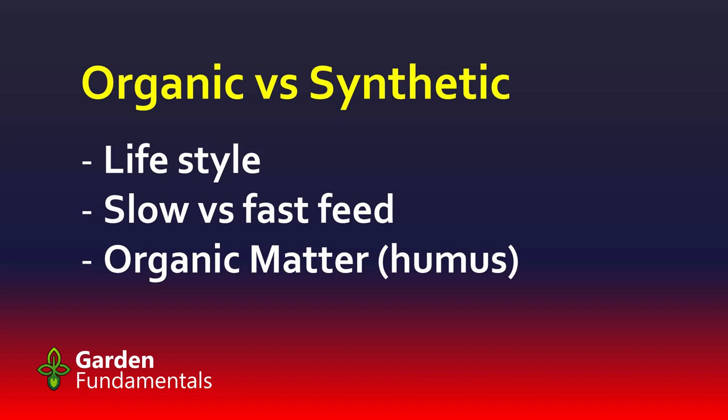The first one is a life choice — some people decide that they're going to go organic for the benefit of their family, the environment, and the world, and there's nothing wrong with that choice. You can also select between organic and synthetic based on the fact that one is slow release and the other is fast release. Organic is a slow feed for your plants and synthetic is a fast feed.